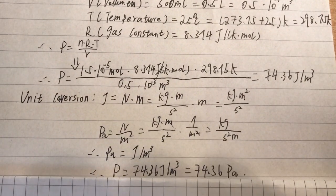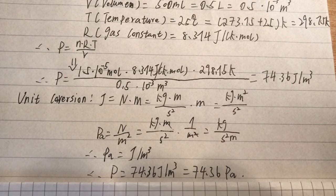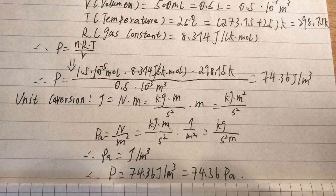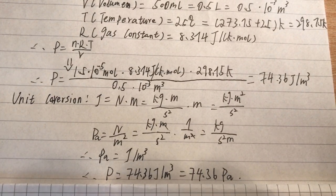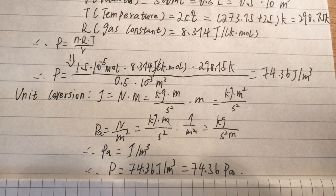So, as you can see here, 1 Pascal is equal to 1 Joule per cubic meter. So, the pressure is equal to 74.36 Pascal. That's it. Thank you for your time.